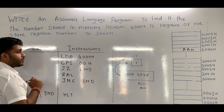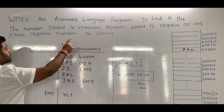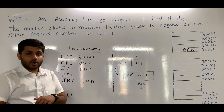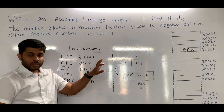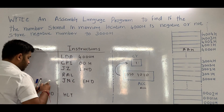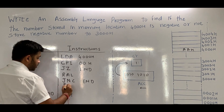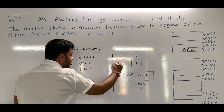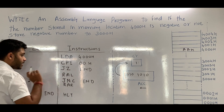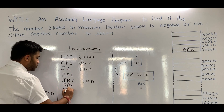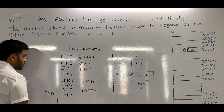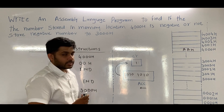When the carry is generated, we have to transfer the data to 3000H. But notice that because we performed the rotate left operation, the data has changed. So we have to restore the data to its original form using the RAR instruction. When we execute RAR, the carry bit is shifted back in and all the bits shift back, so the accumulator gets the original data again. After restoring, we store the data to 3000H using STA 3000H. That is how the program is completed.